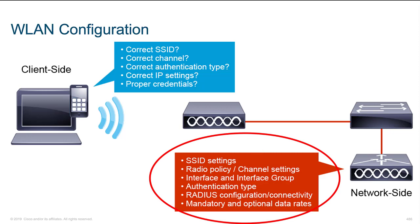On the WLC network side, misconfigured settings are also a major issue. A big one is the radio policy or channel settings — for example, configuring the WLC to allow only 802.11a, 802.11b, or 802.11g radios. If your client doesn't have a compatible radio, it won't connect. Authentication type is another big one, including RADIUS and TACACS+ server configuration and connectivity through the switch. Mandatory and optional data rates that aren't set correctly can also cause throughput issues.